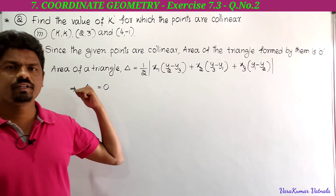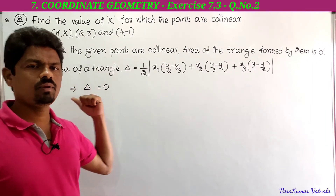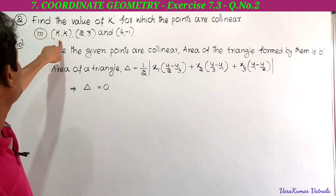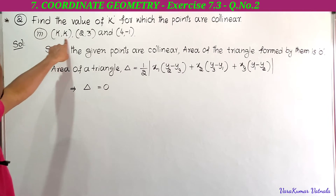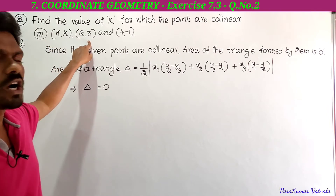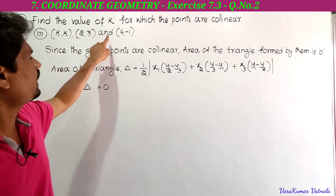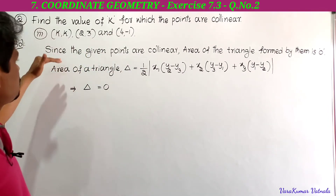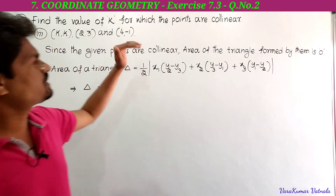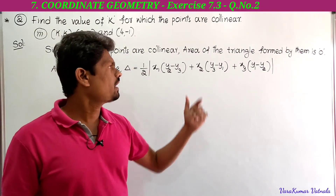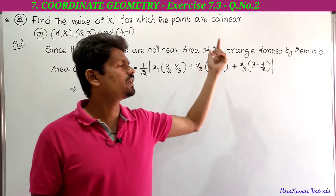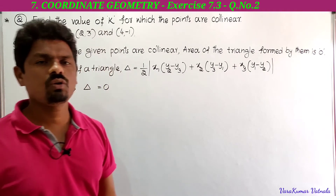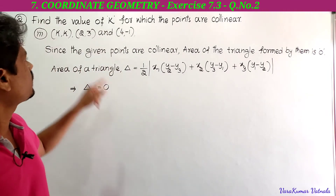This is the third bit in the second problem. The given points are (k, k), (2, 3), and (4, -1). Since the given points are collinear, the area of the triangle formed by them is equal to 0.